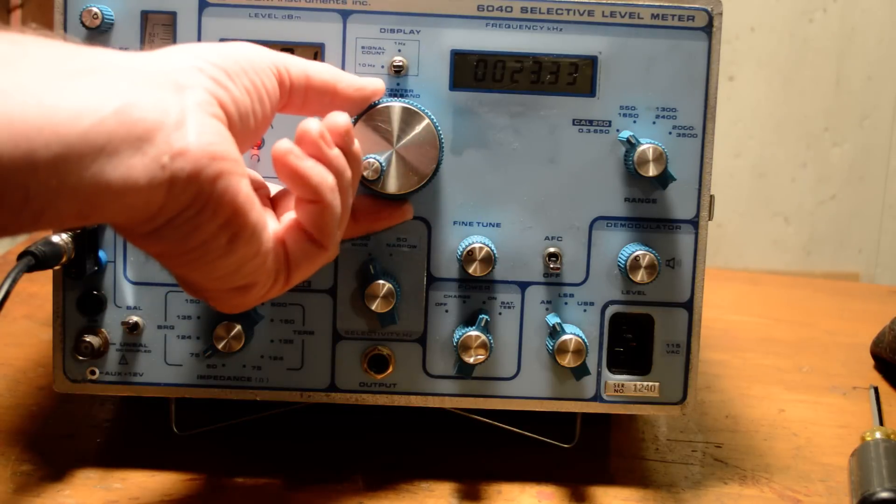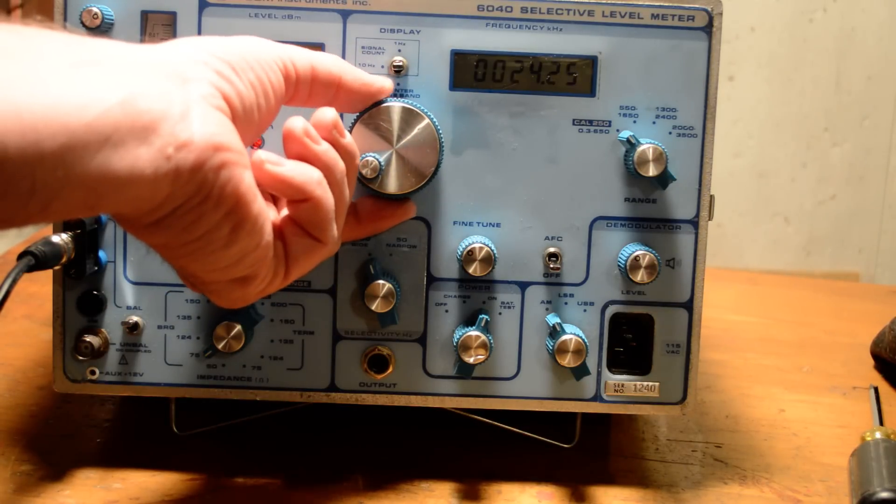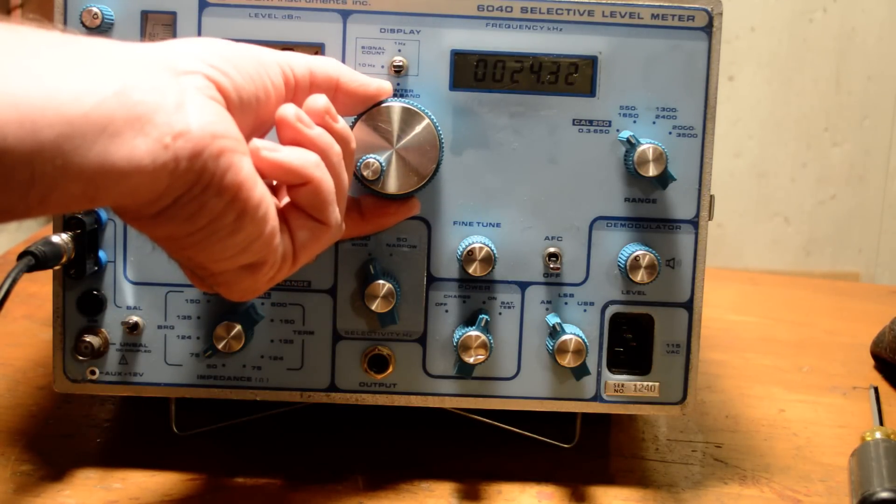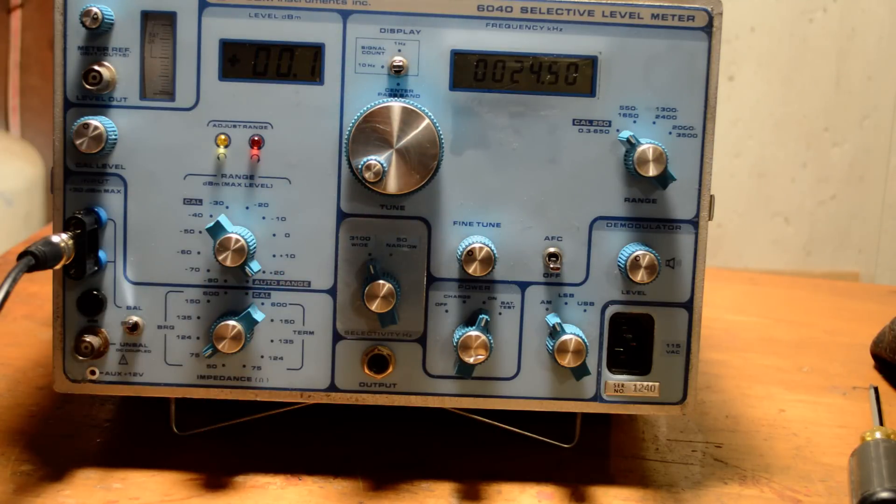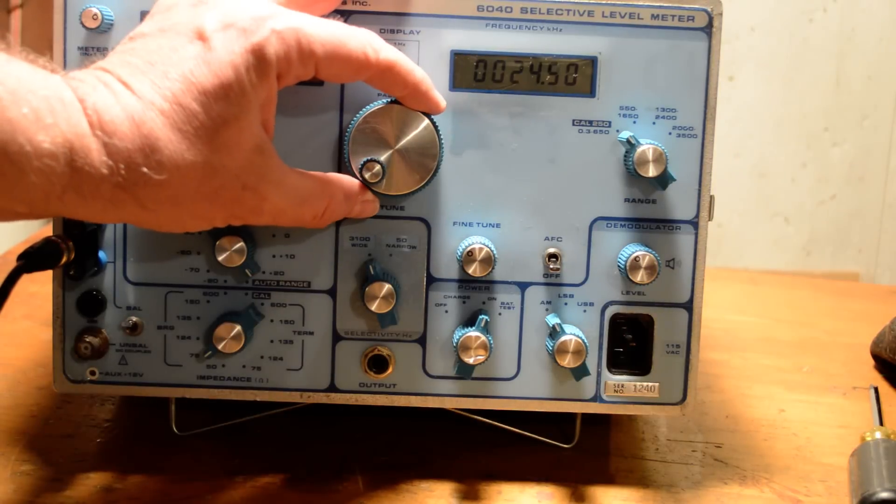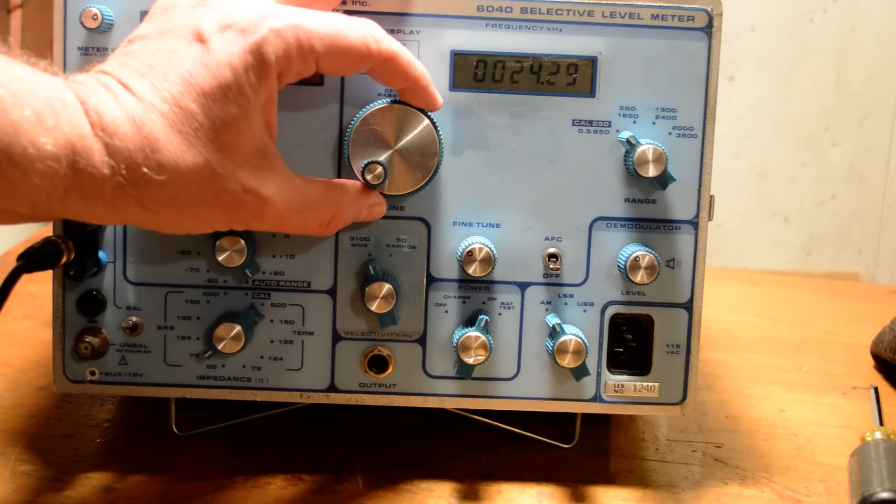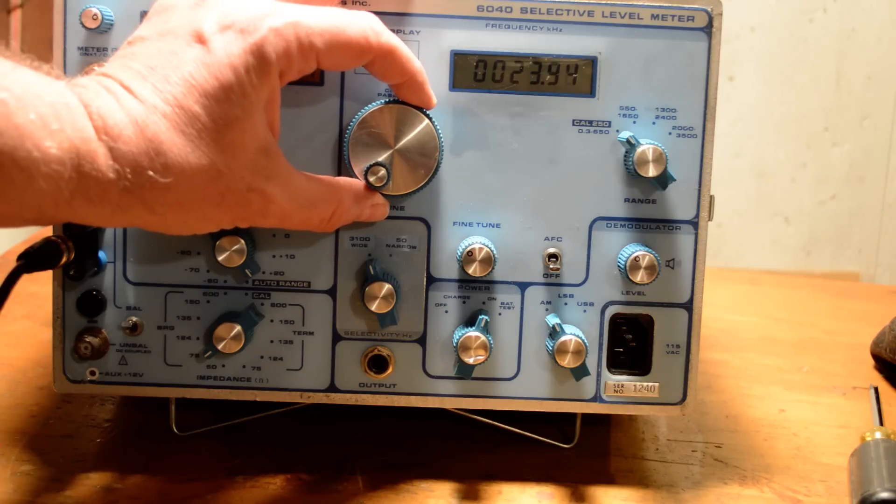So I got it tuned here to about 24 kilohertz. This happens to be the Cutler Maine Navy transmitter for transmitting to submarines out in the Atlantic.